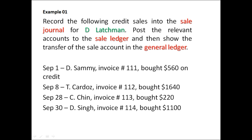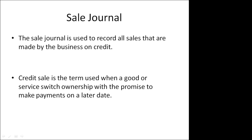When you read your question, you need to identify what accounts to prepare and who it is being prepared for. The sales journal is used to record all sales made by the business on credit — cash sales are not recorded in the sales journal. A credit sale is when goods or services change ownership with the promise to make payment on a later date.